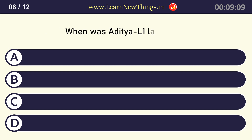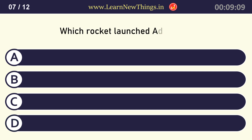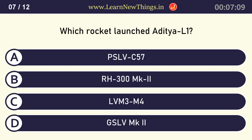When was Aditya L1 launched? 2 September 2023. Which rocket launched Aditya L1? PSLV C57.